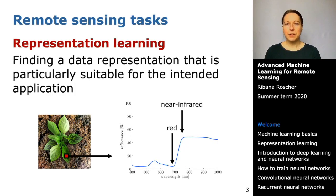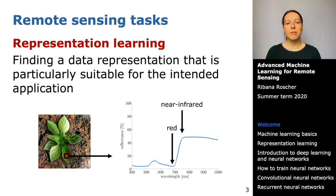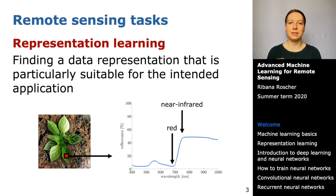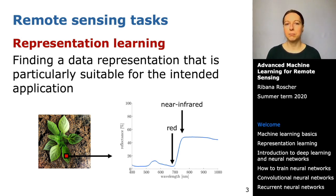During the course I will focus on three fundamental tasks of remote sensing. The first one is representation learning — finding a data representation that is particularly suitable for an intended application. This representation can, for example, be arrived at by dimensionality reduction, clustering, feature selection, or feature extraction.